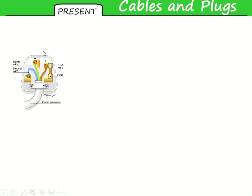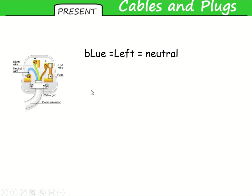Moving on to plugs, we need to look at the components — the wires, fuse, and case — what each one is used for and where they go. To help us with that we have a few mnemonics. On the left: feeds blue — L for left — that is your neutral wire. L for left, L in the word blue.